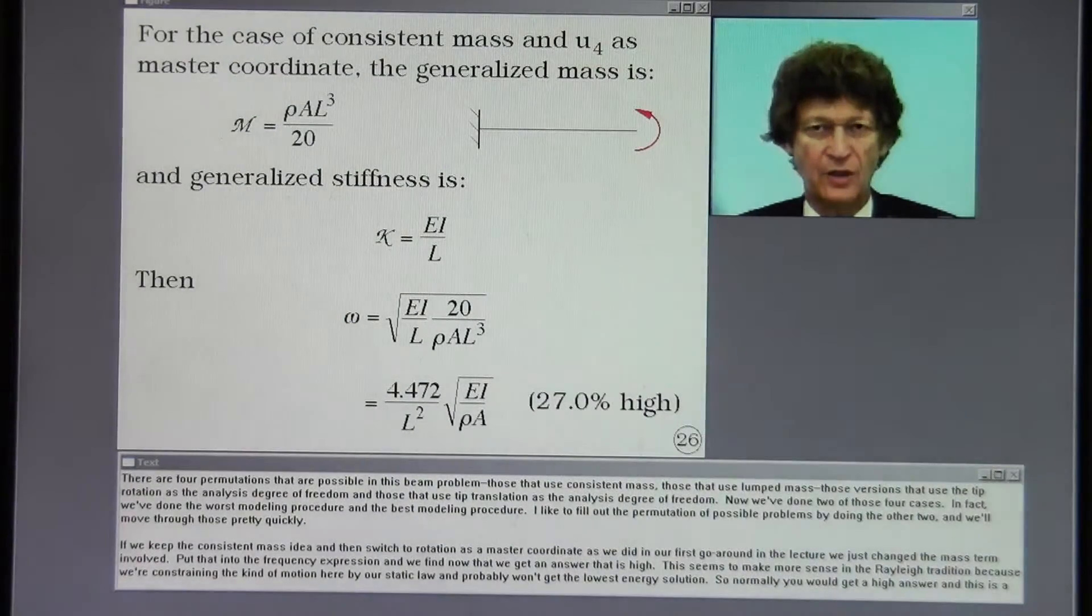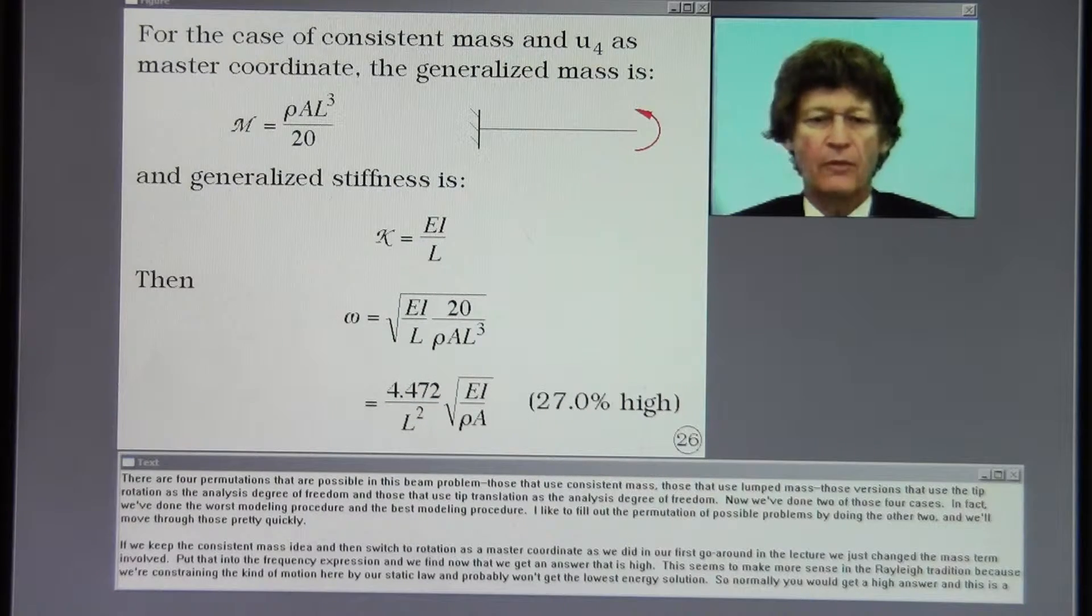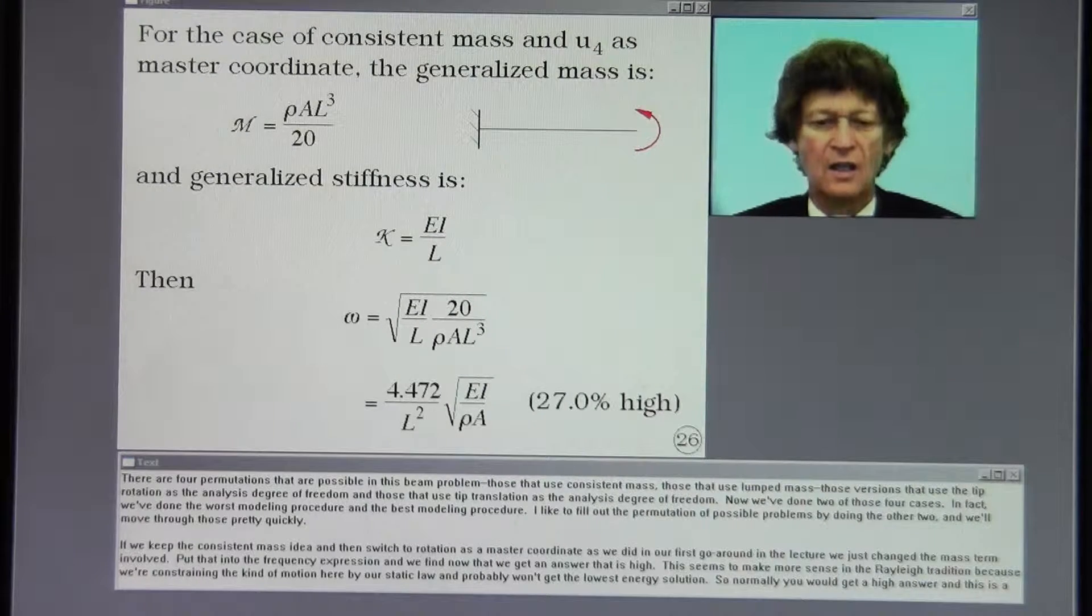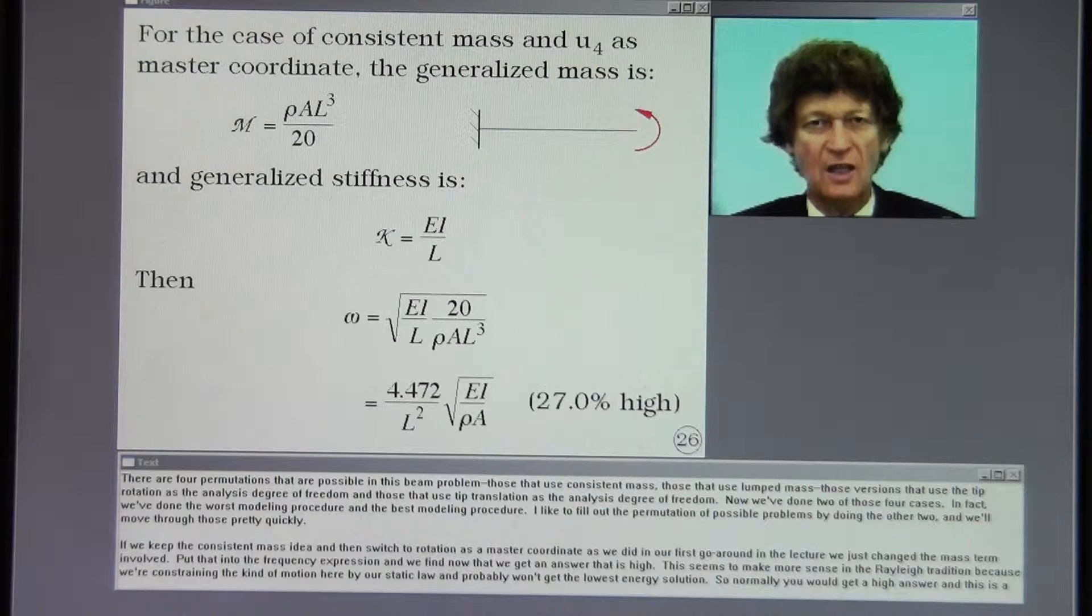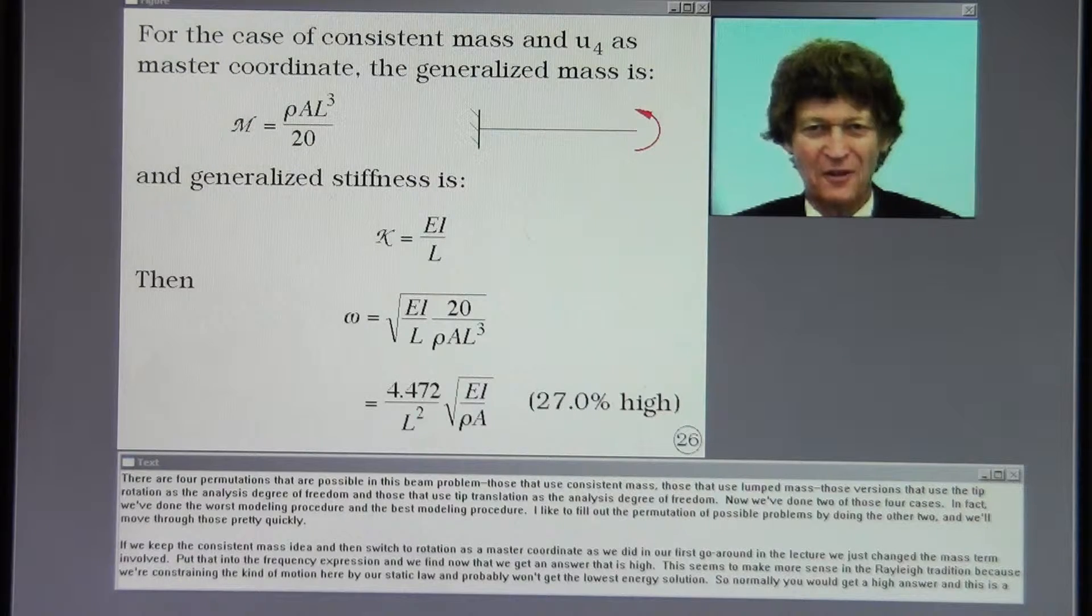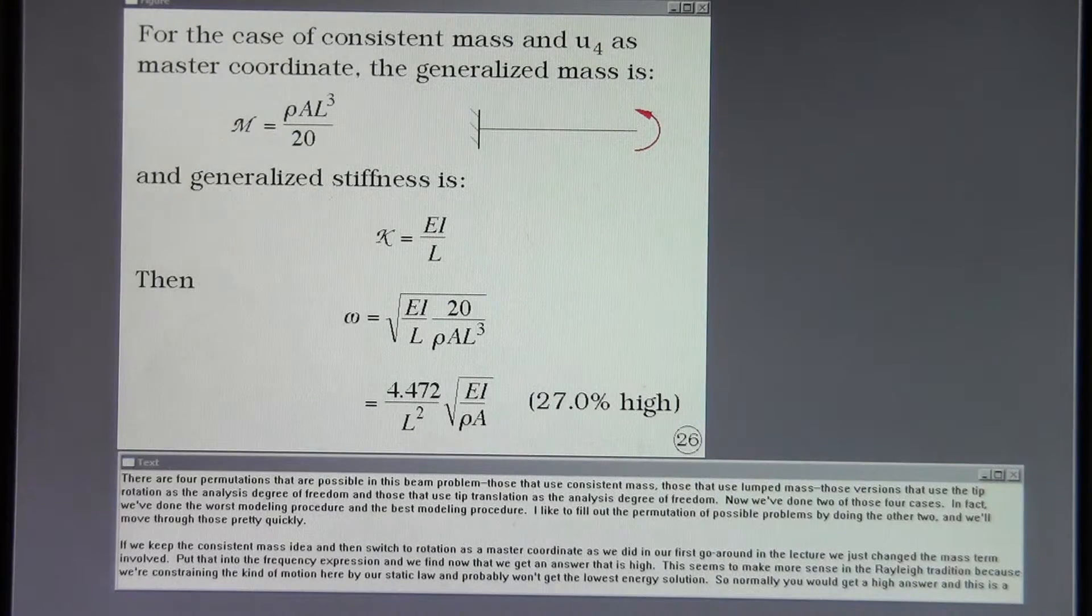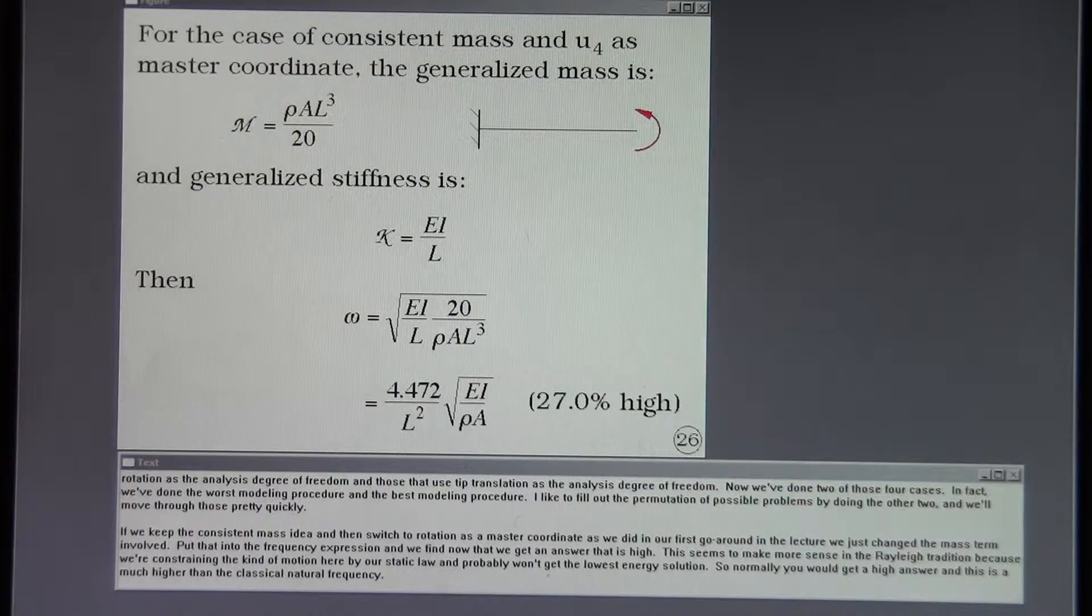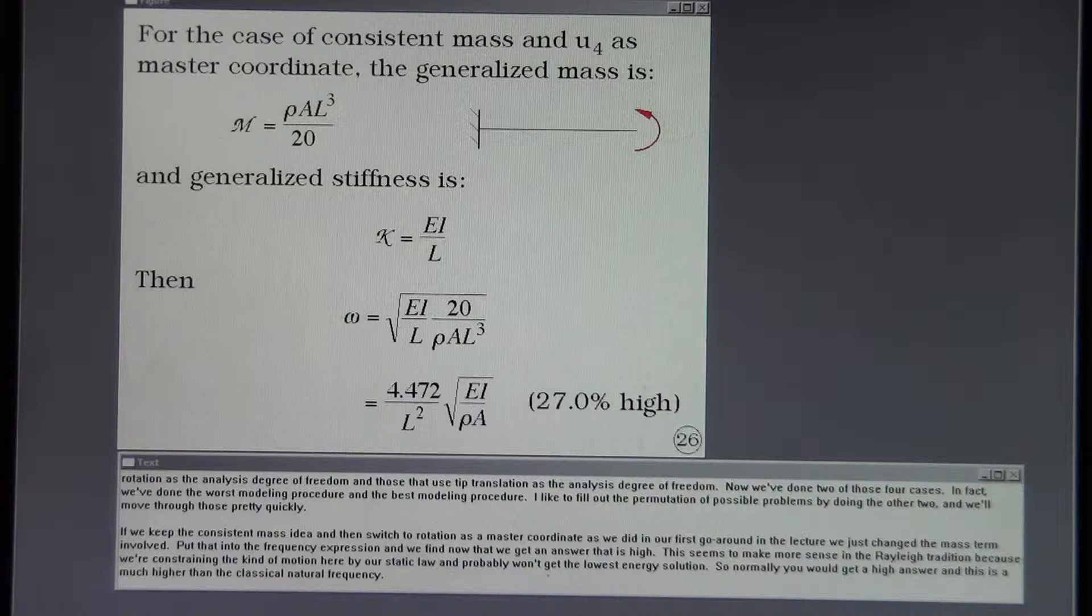There are four permutations that are possible in this beam problem. Those that use consistent mass. Those that use lumped mass. Those versions that use the tip rotation as the analysis degree of freedom. And those that use tip translation as the analysis degree of freedom. Now we've done two of those four cases. In fact we've done the worst modeling procedure and the best modeling procedure. I'd like to fill out the permutation of possible problems by doing the other two. And we'll move through those pretty quickly.